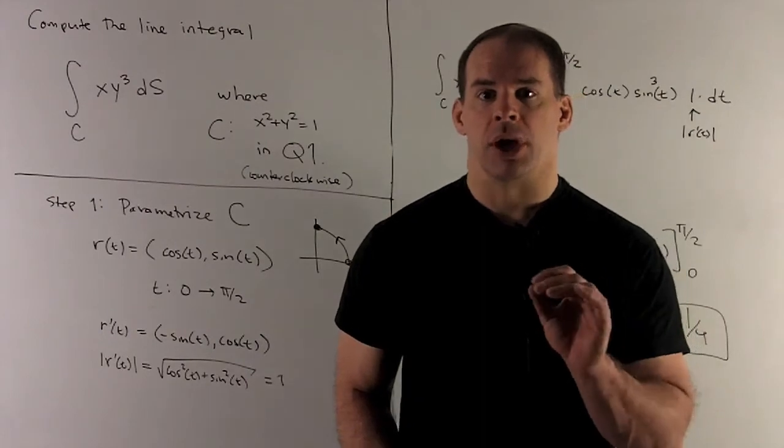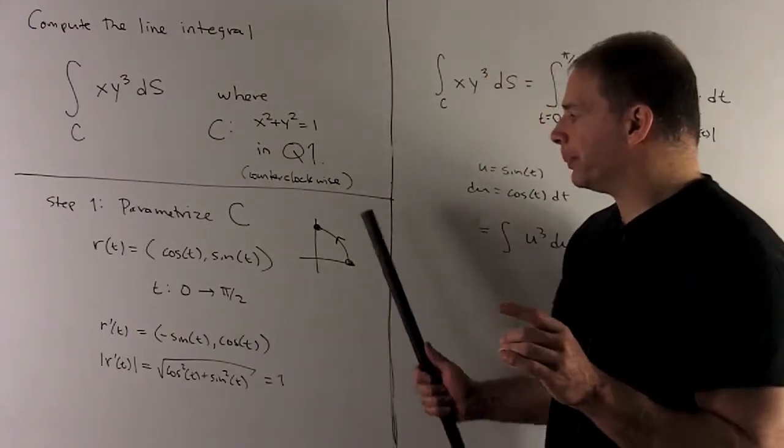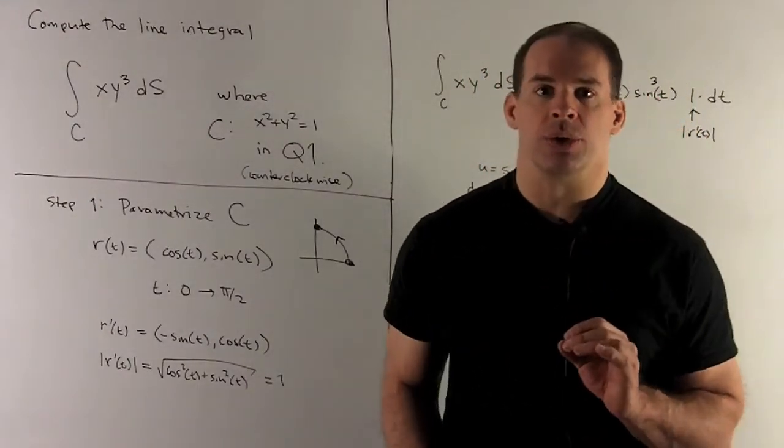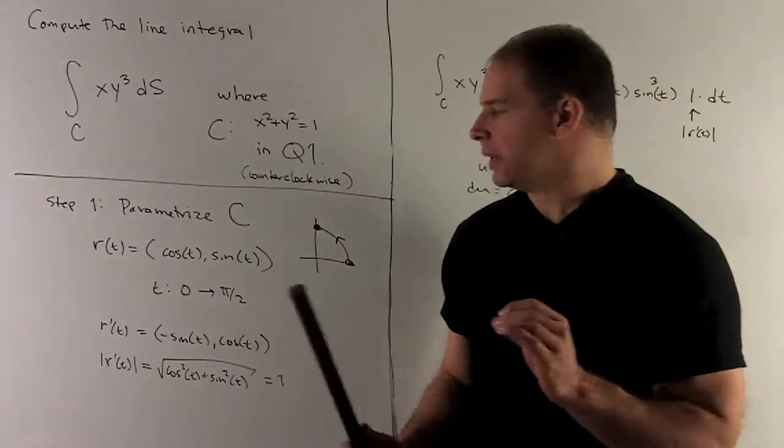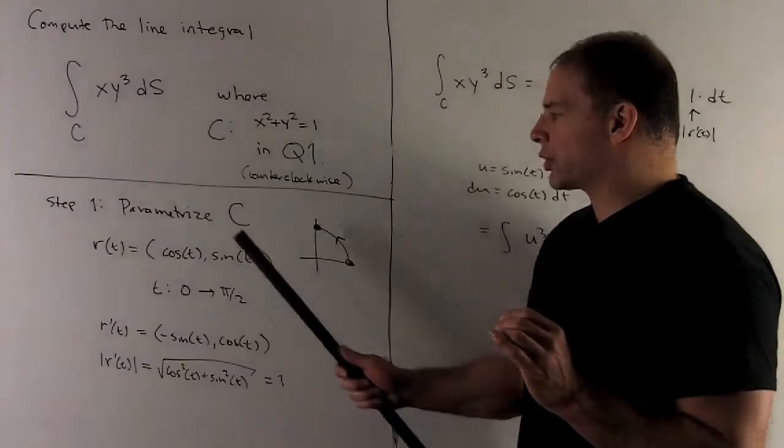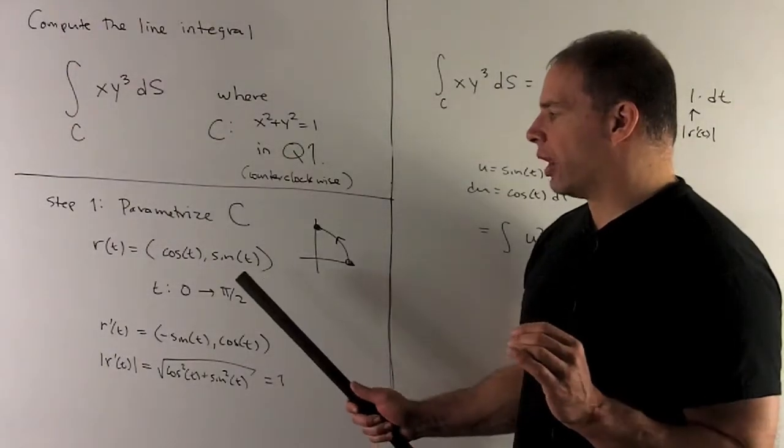Since I'm on the unit circle, natural choice is to use cosine and sine. We just have to make sure we're oriented right. So let's take a look. If I use cosine sine going from t goes zero to pi halves.